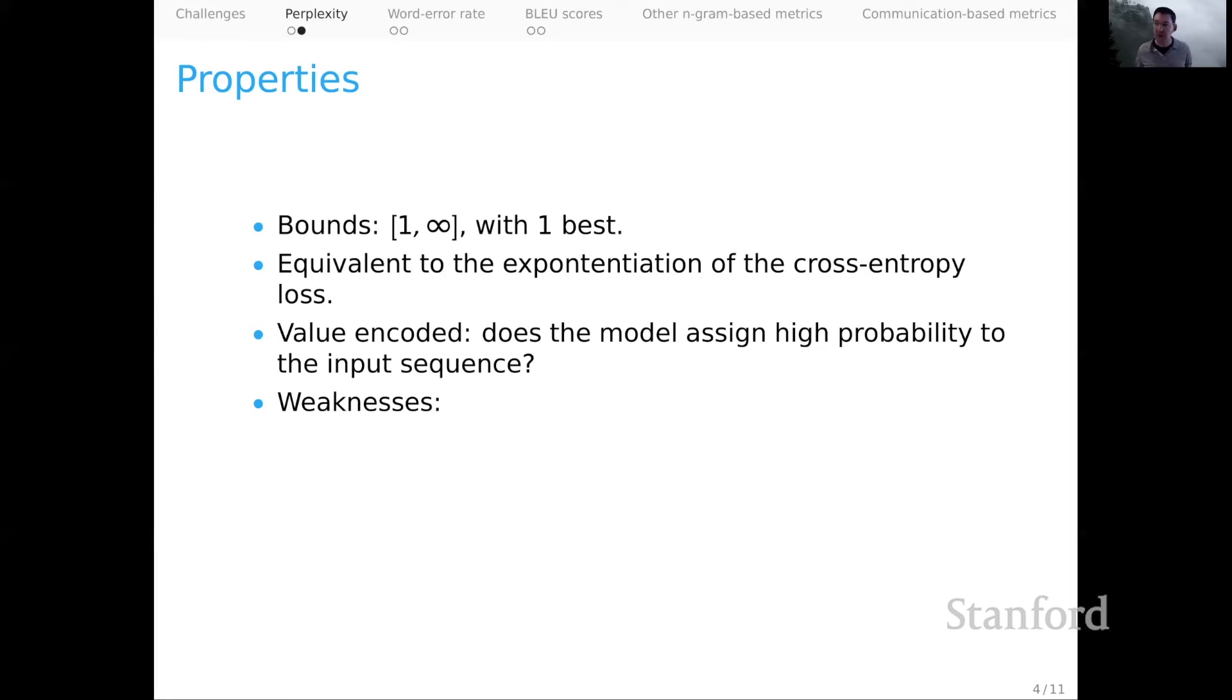The weaknesses, there are many actually. First, it's heavily dependent on the underlying vocabulary. To see that, imagine an edge case where we take every word in the vocabulary and map it to a single unk token. In that case, we will absolutely minimize perplexity, but our system will be useless. In that edge case, you can see that I could reduce perplexity simply by changing the size of my vocabulary. That's a way that you could kind of game this metric inadvertently.